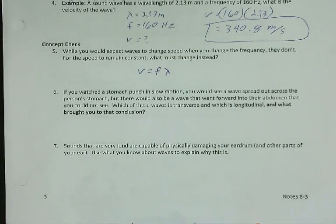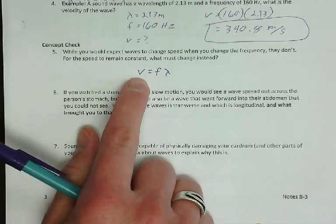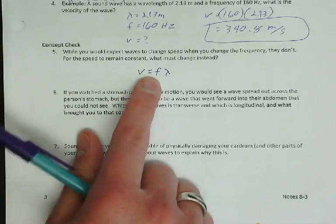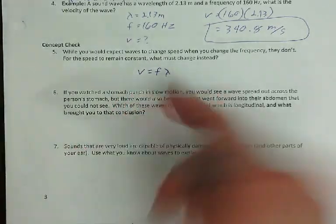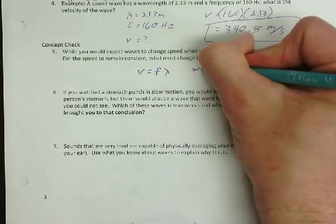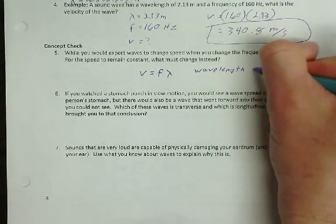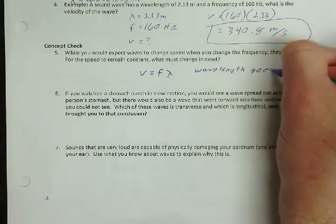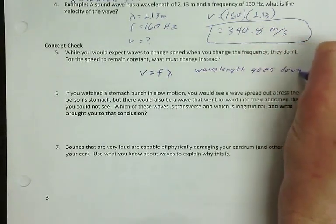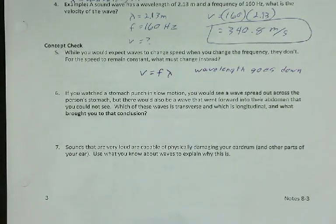But if you increase the 10 to 20, then 20 times 2 is 40. So you would think this answer would get larger, but it doesn't. The reason why is if the frequency goes up, the wavelength goes down. So that's why the velocity stays the same.